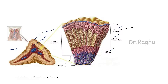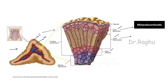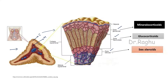The zona glomerulosa produces mineralocorticoids, and aldosterone is the most important mineralocorticoid. The zona fasciculata produces glucocorticoids, and cortisol is the most important glucocorticoid. The zona reticularis produces sex steroids. Below this, the adrenal medulla produces a group of hormones called catecholamines, which include epinephrine and norepinephrine.